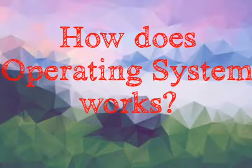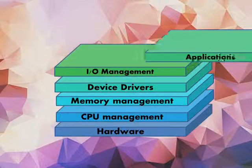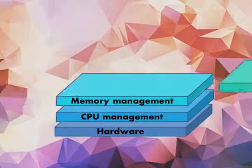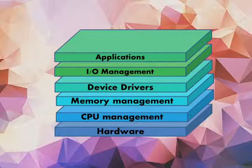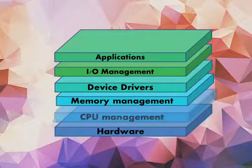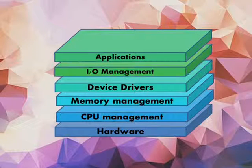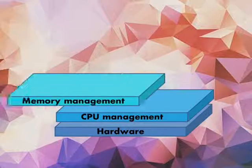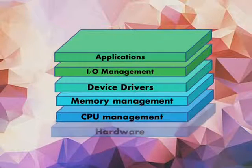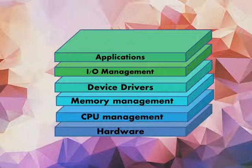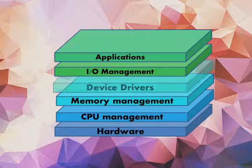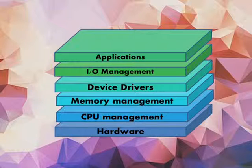How does an operating system work? The operating system plays the role of a good parent, making sure that each application gets the necessary resources while playing nicely with all the other applications, as well as managing the limited capacity of the system for the greatest good of all users and applications. Providing a consistent application interface is especially important if there is more than one of a particular type of computer using the operating system, or if the hardware making up the computer is ever open to change.